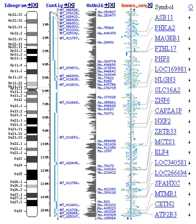Section 2.2 Genome Annotation. In the context of genomics, annotation is the process of marking the genes and other biological features in a DNA sequence. The first genome annotation software system was designed in 1995 by Dr. Owen White, who was part of the team at the Institute for Genomic Research that sequenced and analyzed the first genome of a free-living organism, the bacterium Haemophilus influenzae. White built a software system to find the genes, the transfer RNAs, and to make initial assignments of function to those genes. Most current genome annotation systems work similarly, but the programs available, such as the G-Mark program, are constantly changing and improving.